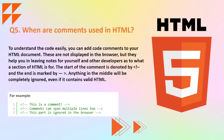Moving on to the next question: when are comments used in HTML? To understand the code easily, you can add code comments to your HTML document. They are not displayed in the browser, but they help you leave notes for yourself and other developers as to what a section of HTML is for. The start of a comment is denoted by the opening bracket with an exclamation mark and dashes, and the end is marked by the closing symbol. Anything in the middle will be completely ignored, even if it contains valid HTML.